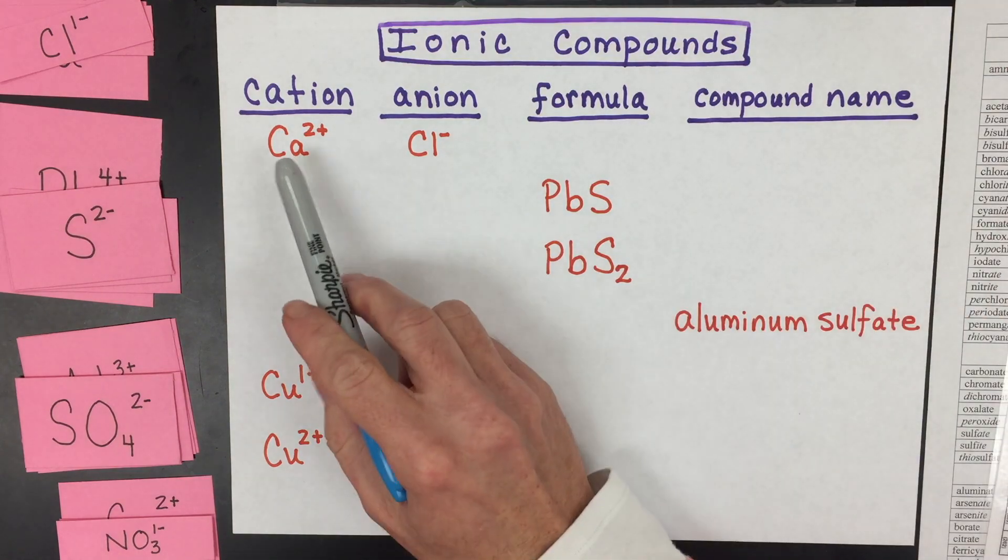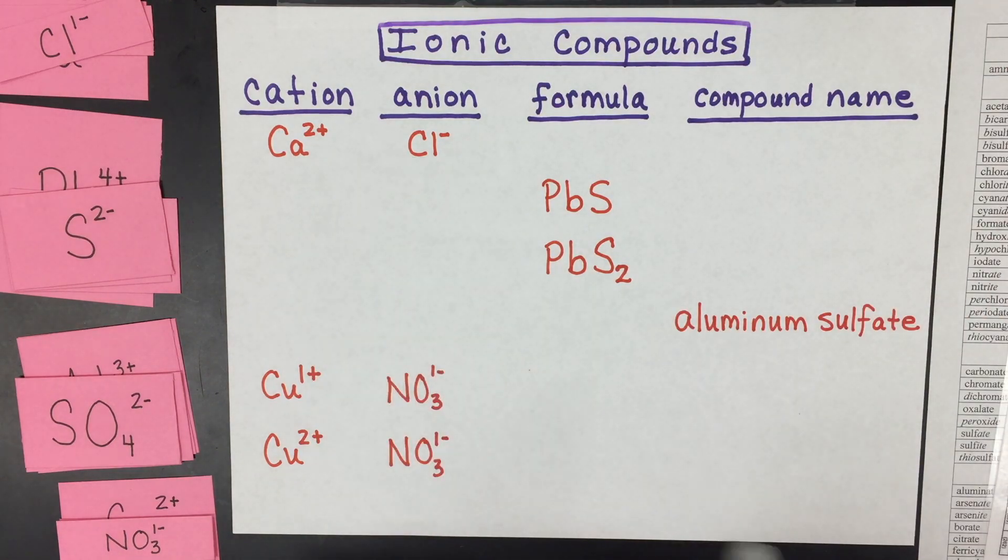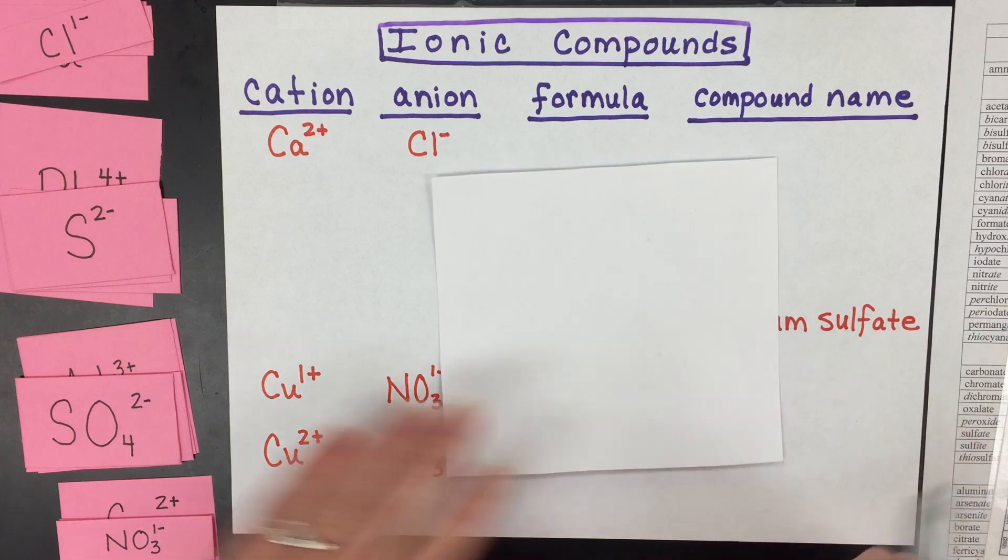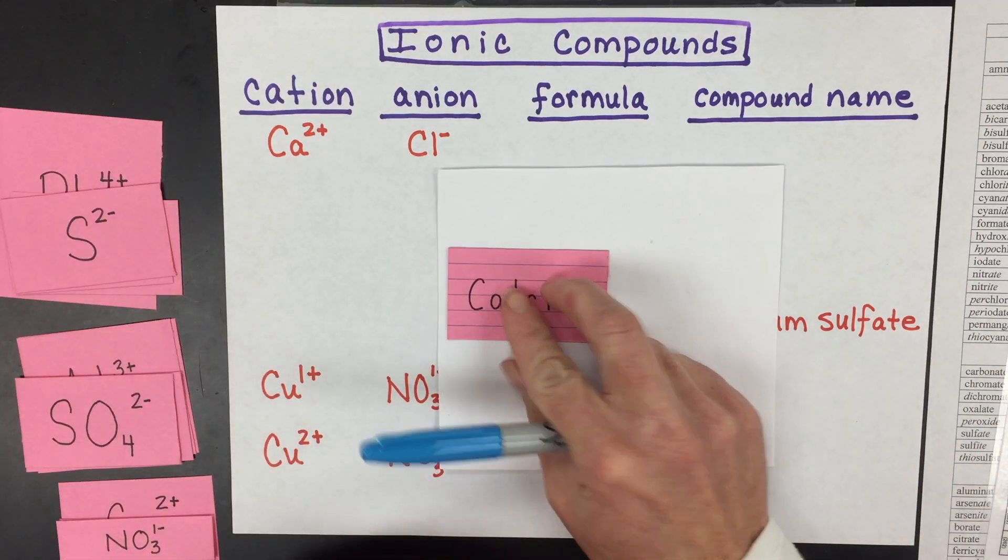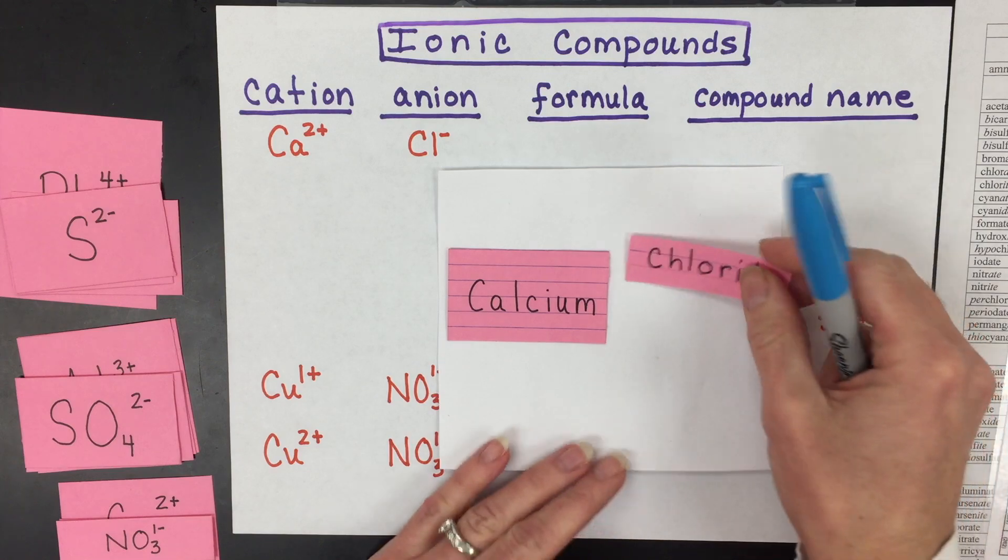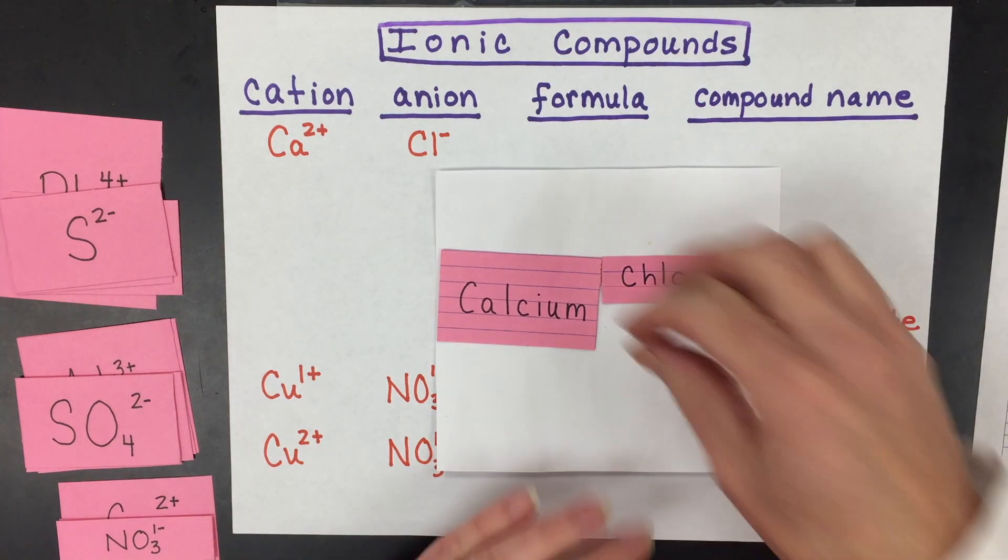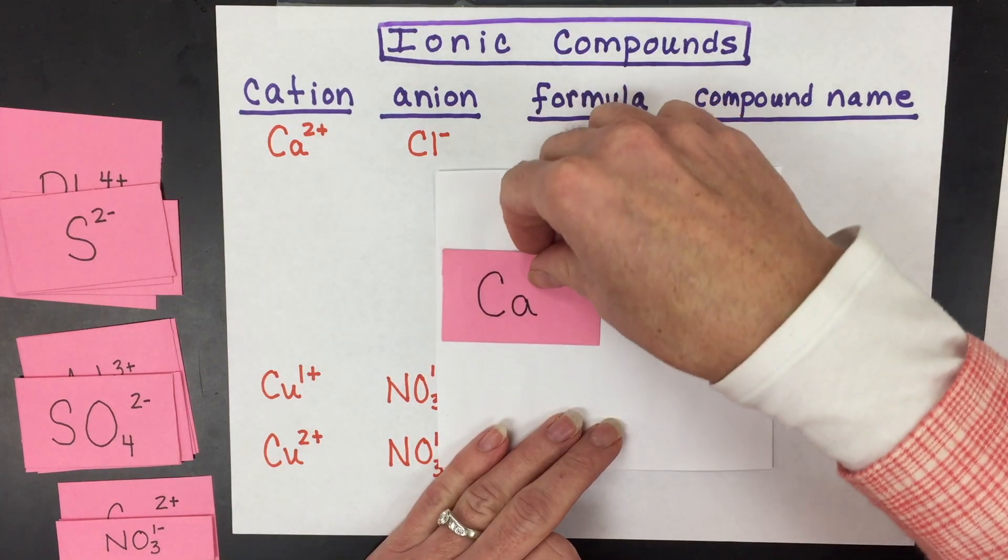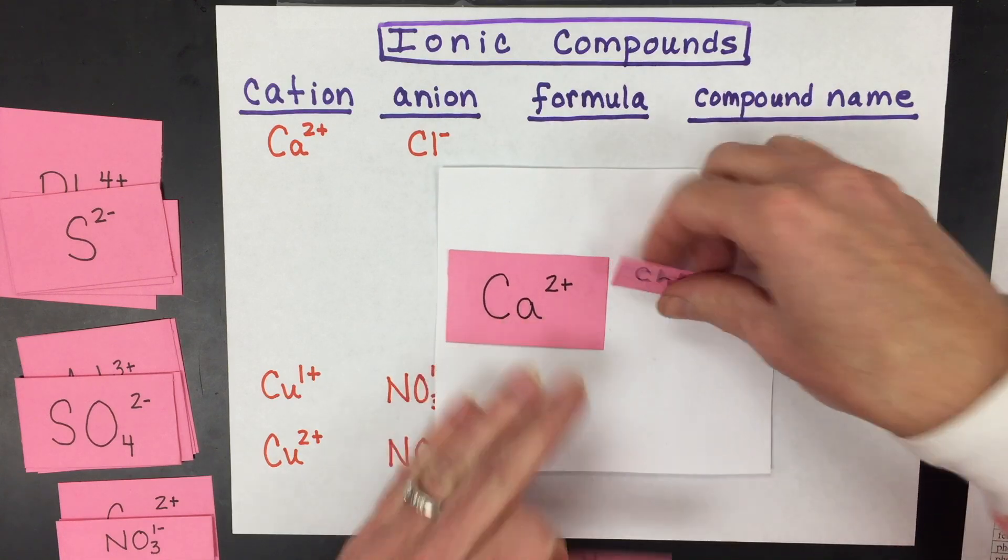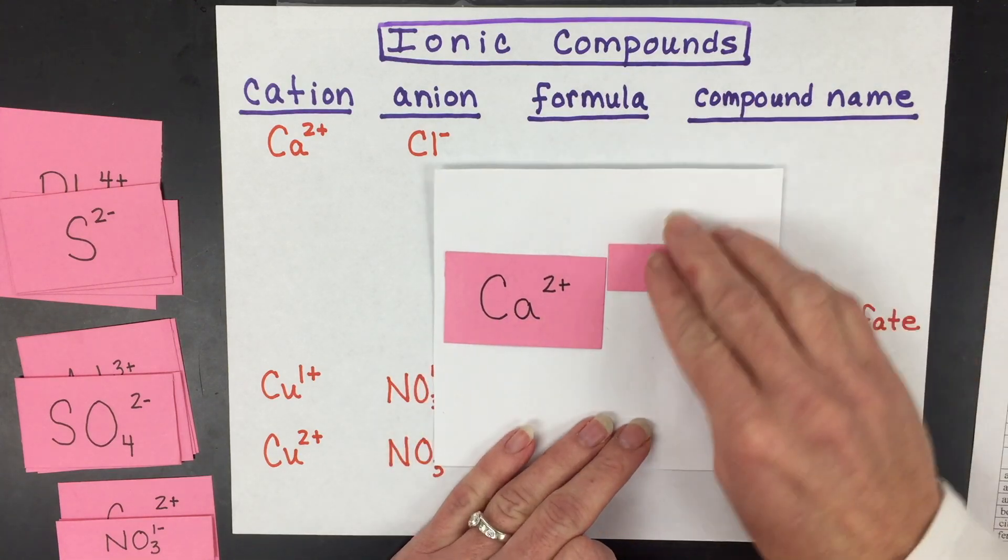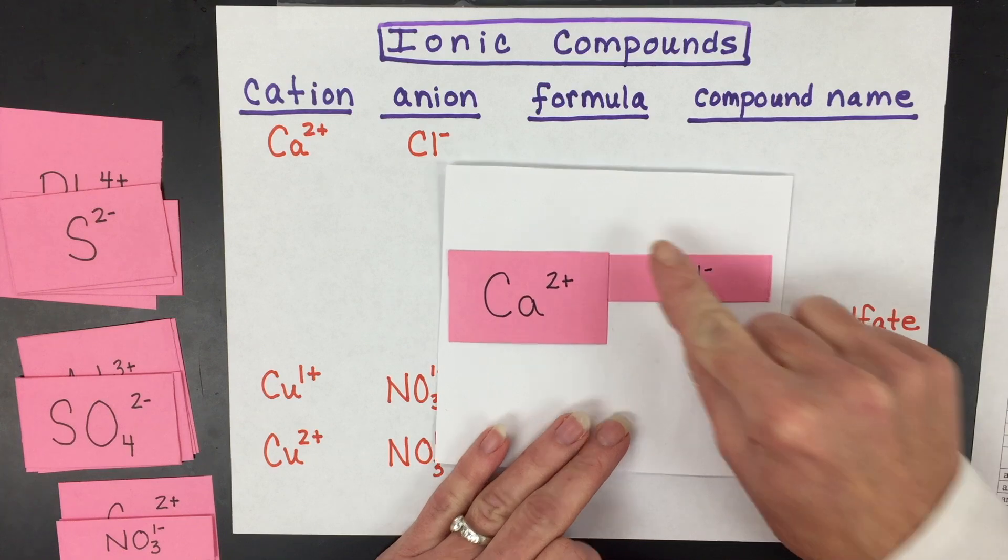So we're going to start with the cation calcium and the anion chloride. We're going to have the calcium ion and the chloride ion. I've used cards with the size of the charge so that you follow the major rule of ionic compounds is that the net charge has to equal zero.